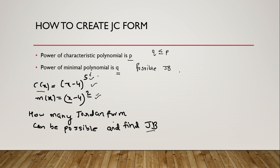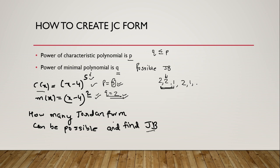Here p is 5 and q is 2. You always start with q. You have to split the power of the characteristic polynomial, 5, as the sum of q or lesser values. For example: 2, 2, 1 — sum is 5. That is one possible Jordan block arrangement. Another possibility: 2, 1, 1, 1 — that is another Jordan block arrangement.